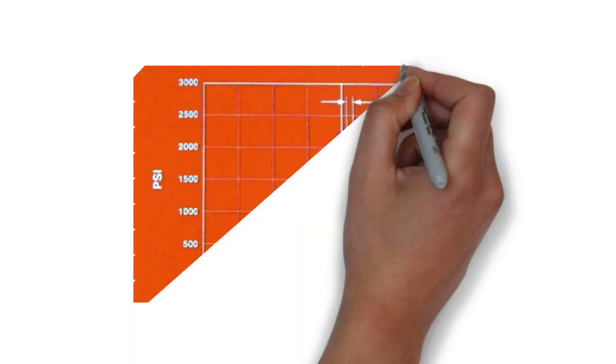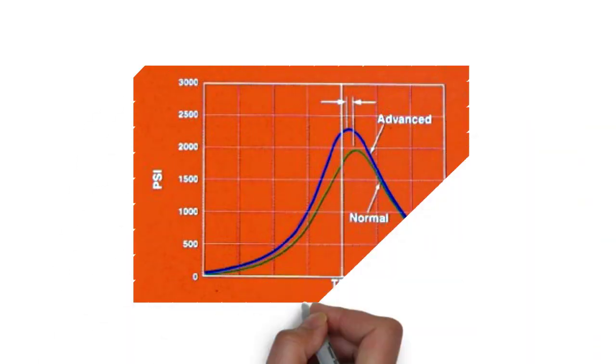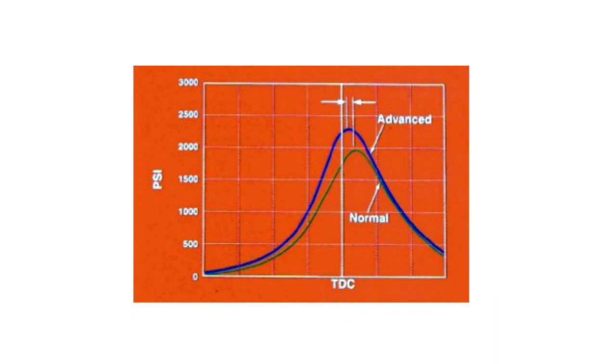At a given RPM and quantity of fuel, injection timing determines cylinder pressure. Notice that the point of peak pressure can be moved by changing the point at which fuel begins to enter the combustion chamber.